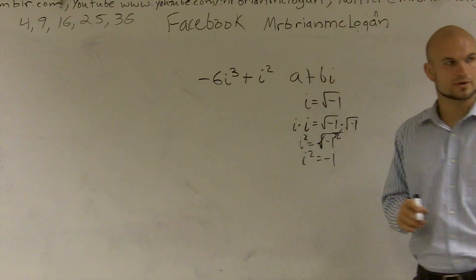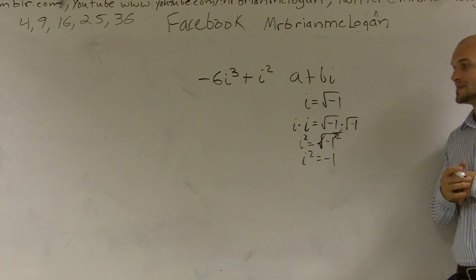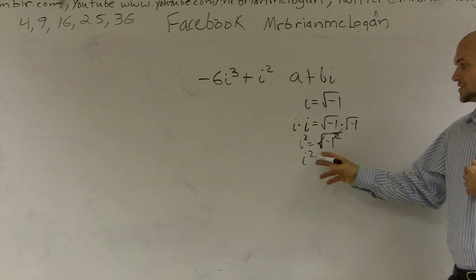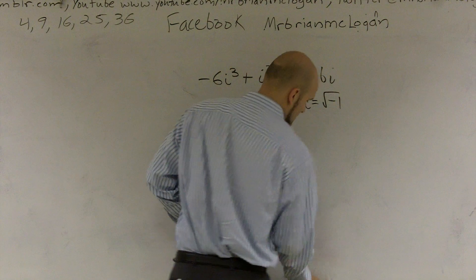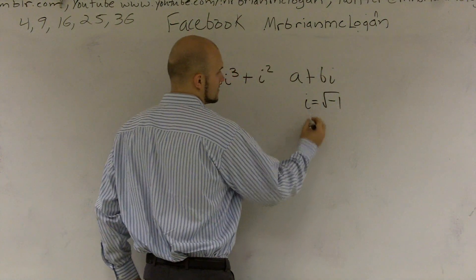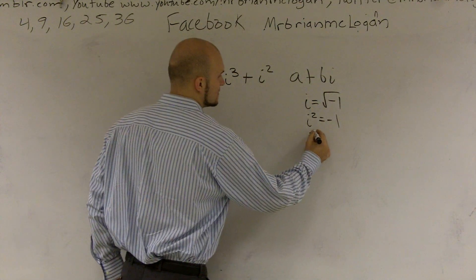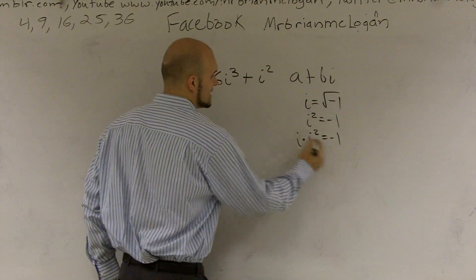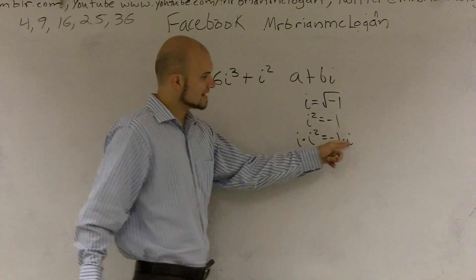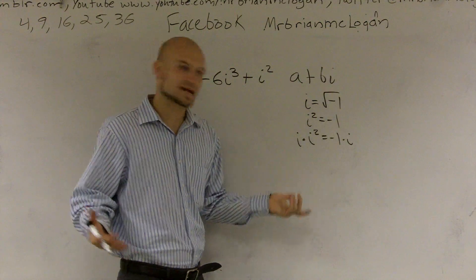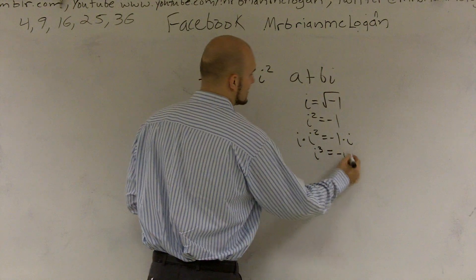Do you believe me on that? Some people think math — it's basically a cancel out. So then, if I want to find out what i squared is, let's just rewrite it. We know i squared is negative 1. Then, if I multiply that again by i, i squared times i is going to give you i cubed. And what's i times negative 1? Negative i — so i cubed equals negative i.